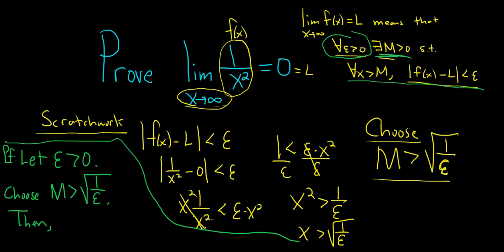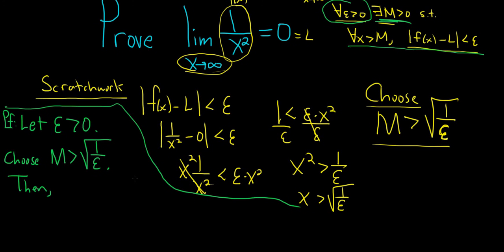So then, let me scroll down here. For all x bigger than capital M, we have f of x minus L. So f of x is 1 over x squared minus 0. And we know that's the absolute value of 1 over x squared.